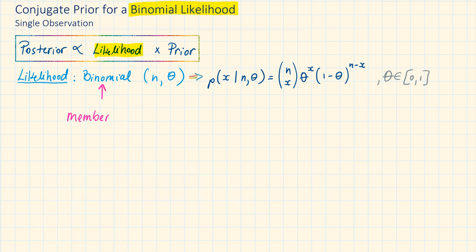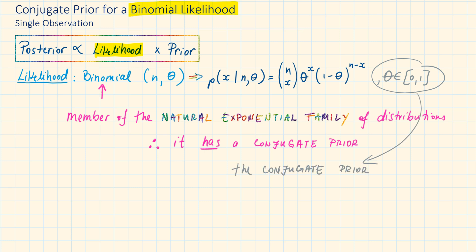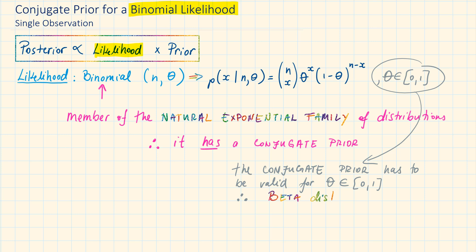The binomial distribution is a member of the natural exponential family of distributions, therefore it has a conjugate prior. The limit of theta for a binomial distribution is between 0 and 1, and for the conjugate prior, theta has to be valid for the same limits. Another member of the natural exponential family of distributions with the same limits for theta is the beta distribution.